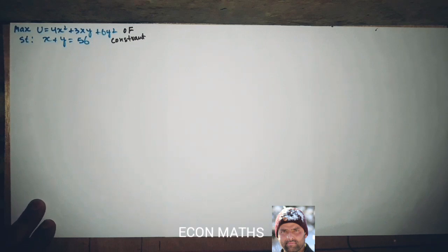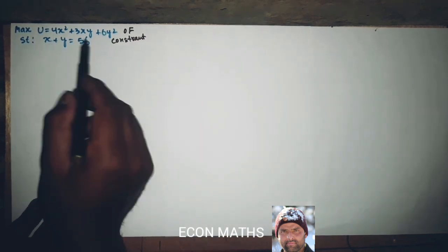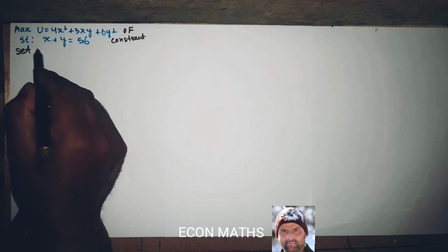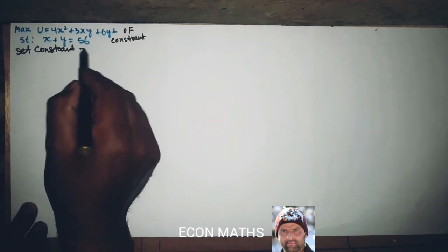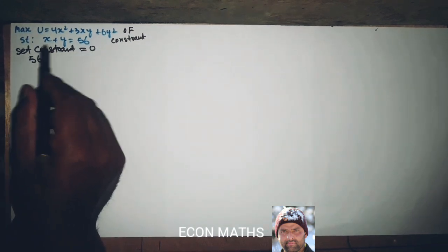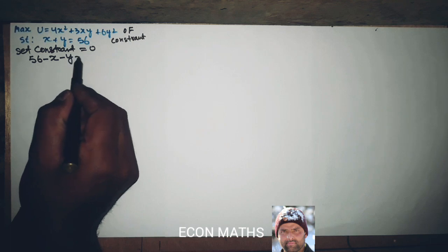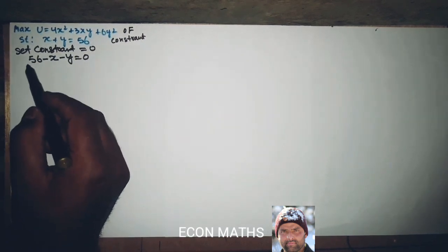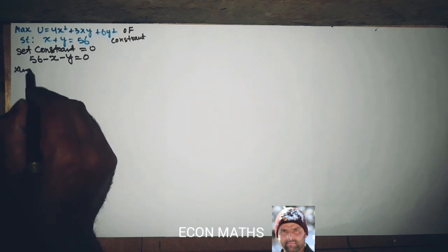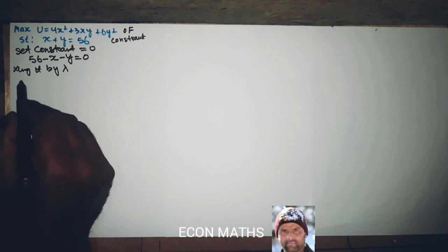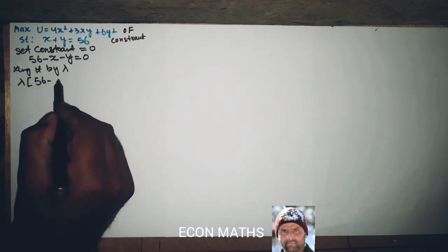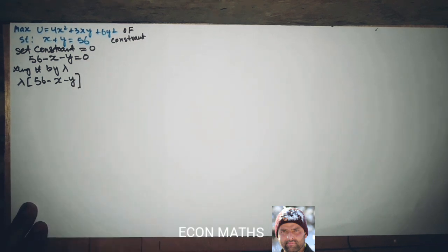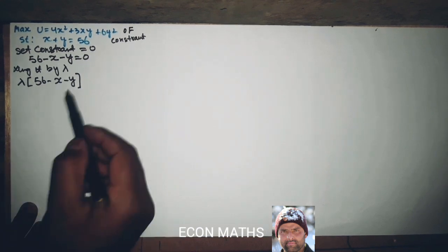To solve this maximization problem, first we will set the constraint equal to zero. So this implies 56 minus x minus y equals zero. After that, we will multiply this constraint with lambda, so this will become lambda times (56 minus x minus y).